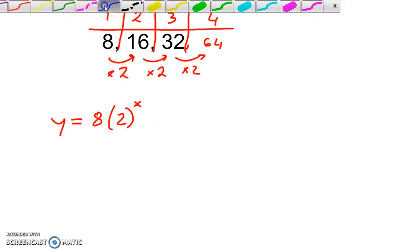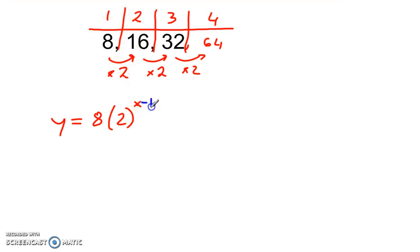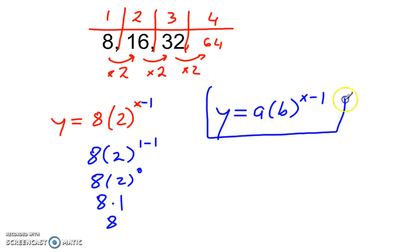And that is simply by subtracting 1 from x. So now if I do 1, if I plug in 1 here, 8 times 2, 1 minus 1, that is 8 times 2 to the 0 power, 8 times 1 is 8. So if I plug in 1, I get out 8. So your formula is y equals a times b to the power of x minus 1 for any sequence.